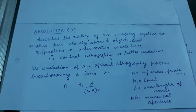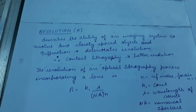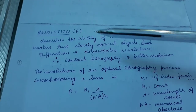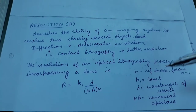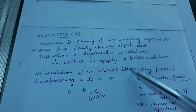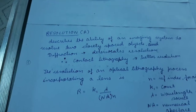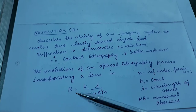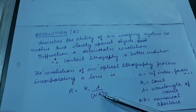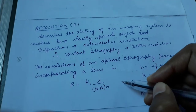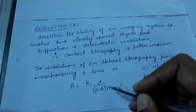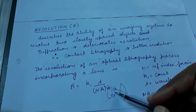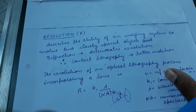Resolution is the ability of an imaging system to resolve two closely spaced objects, and it is deteriorated by diffraction — that is why contact lithography has better resolution. In optical projection lithography, resolution is given by R = k₁λ / (n × NA), where k₁ is a constant, λ is the wavelength of the source, and NA is the numerical aperture. Numerical aperture depends on the size of the lens — a larger lens has a larger numerical aperture.